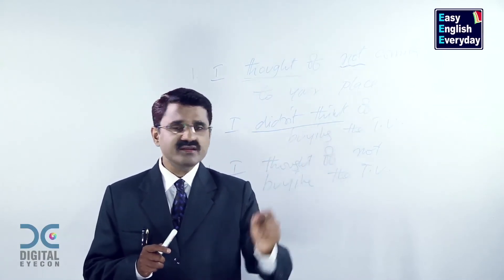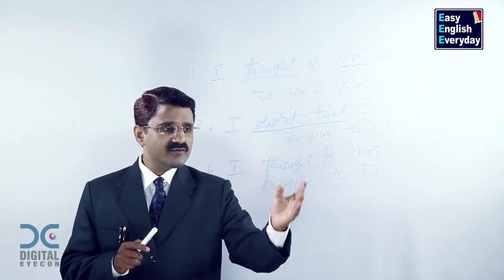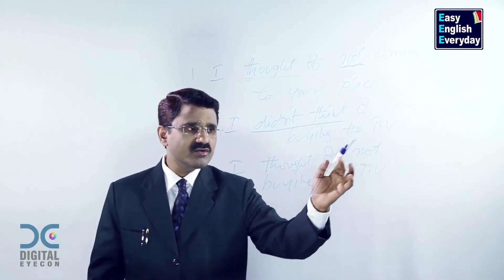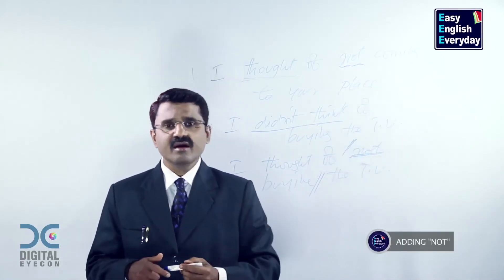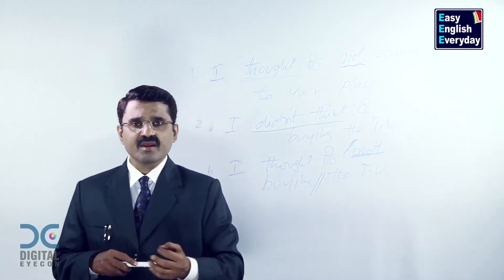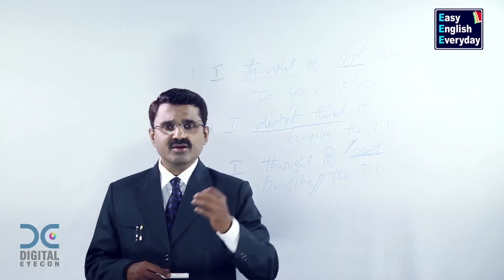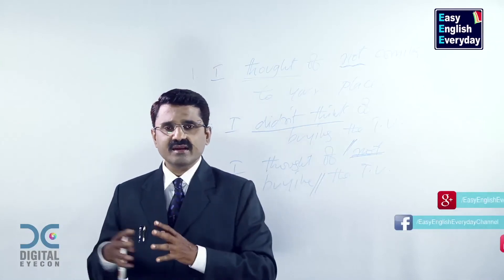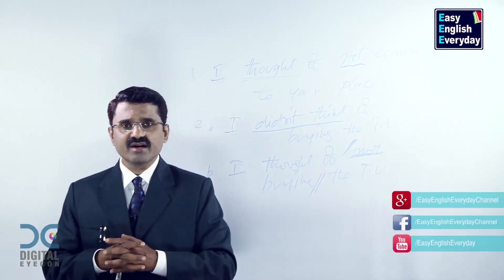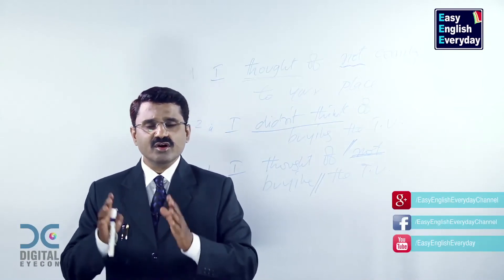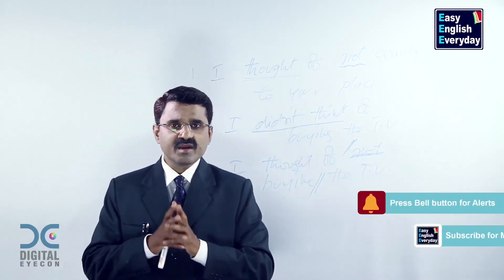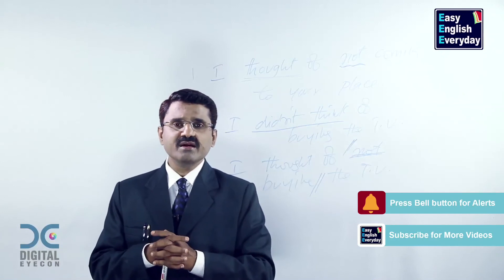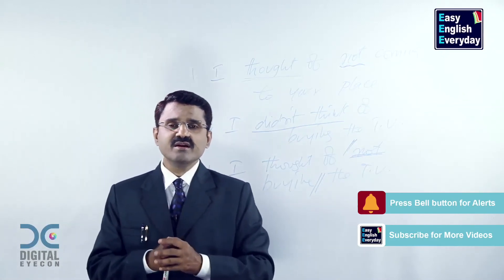I didn't think of buying the TV gives one meaning, whereas I thought of not buying the TV gives a different meaning. Here we are concentrating on making examples by adding NOT inside. I thought of not sleeping today. I thought of not eating anything. I thought of not working there. I thought of not donating money to anybody. I thought of not collecting any more quotations. I thought of not sending my children to school yesterday. I thought of not meeting any press reporters yesterday. I thought of not investing money in real estate anymore. I thought of not buying new clothes for the festival.